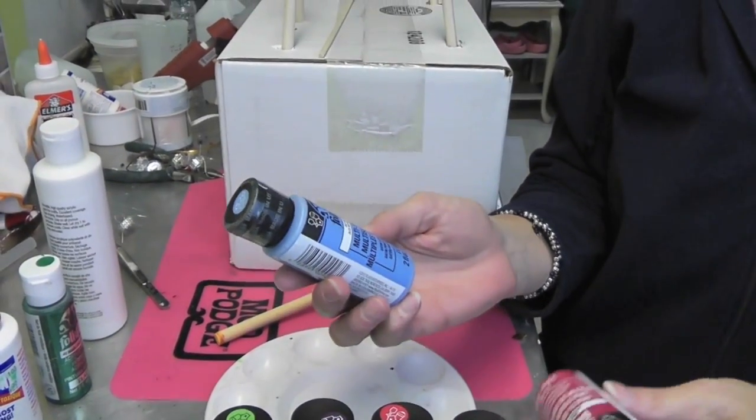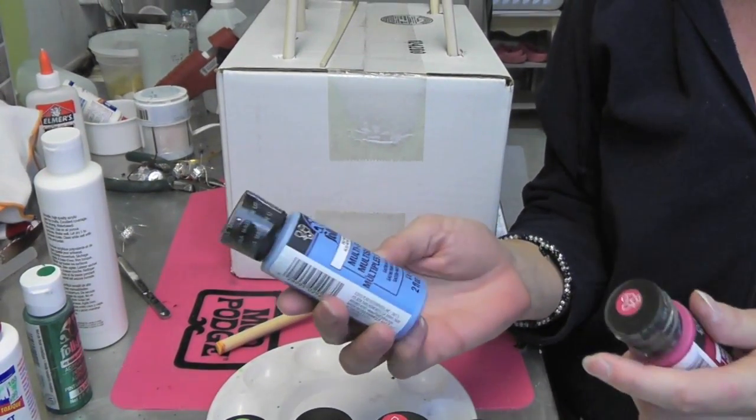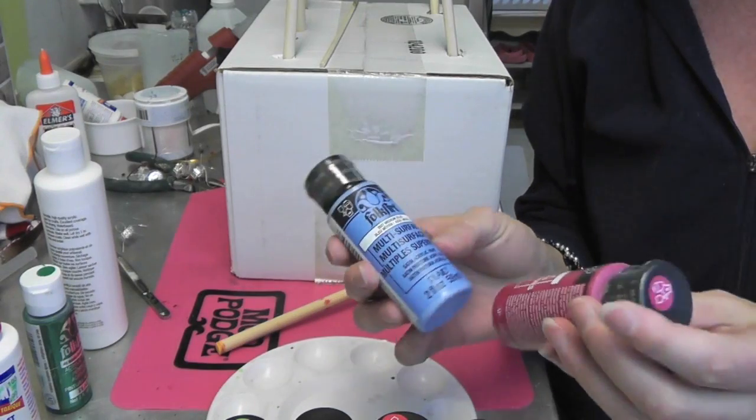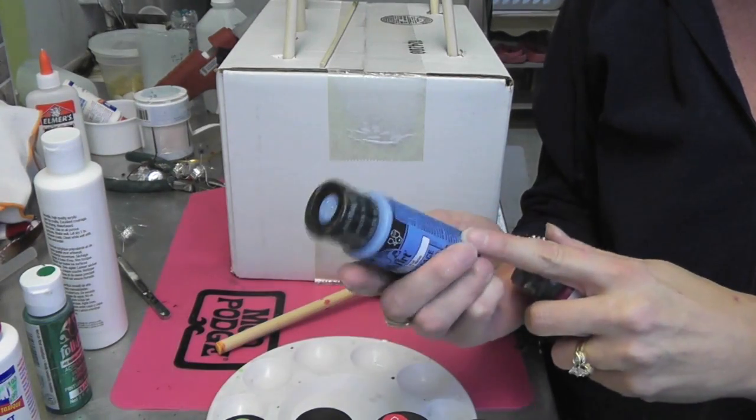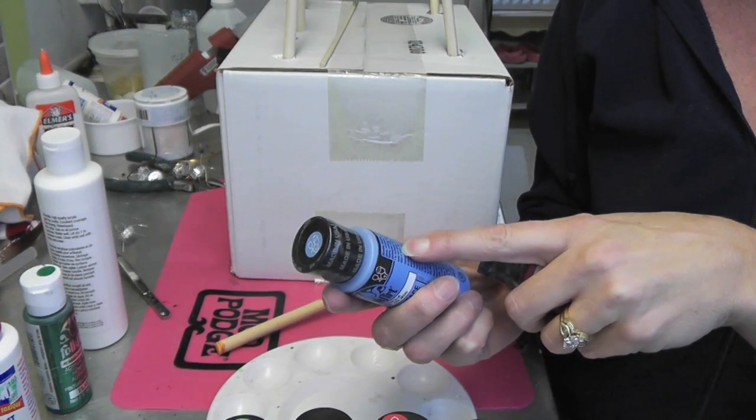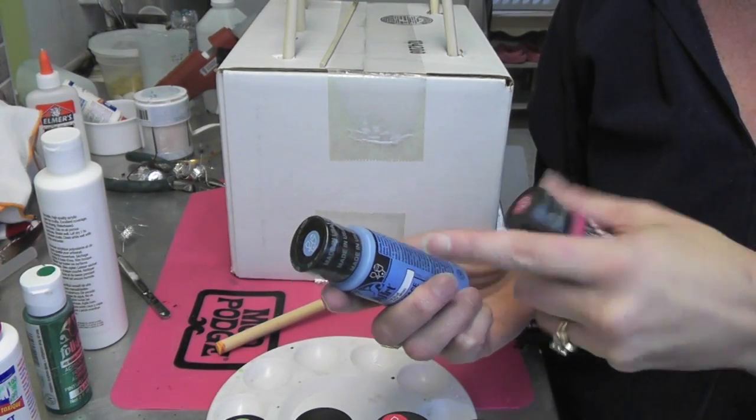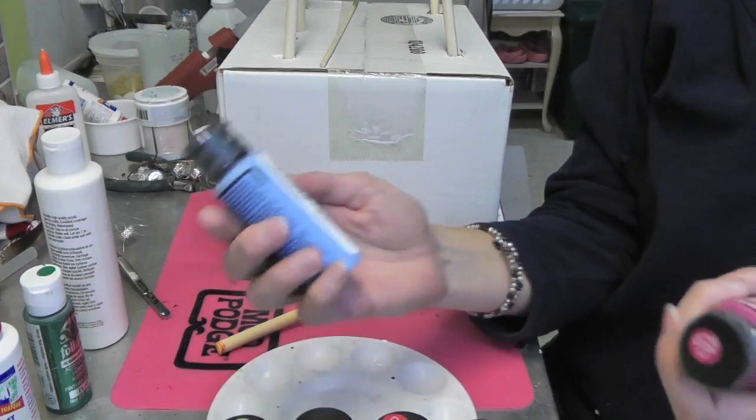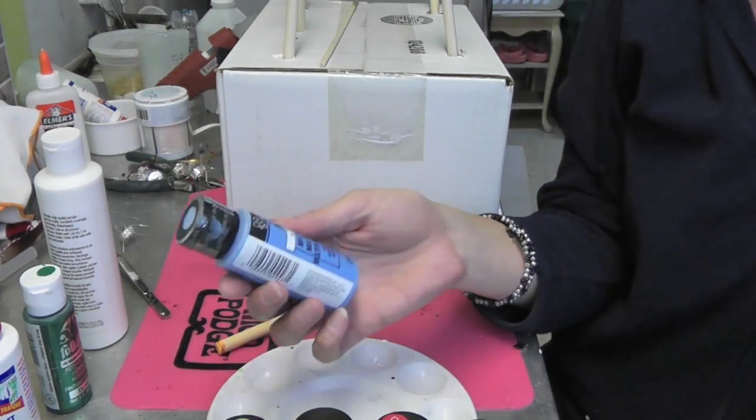Now the paint I'm using is this Plaid Folk Art multi-surface paint and you can put it on glass. If you let it air dry for 21 days it will cure onto the glass, otherwise you can bake it. And it says you've got to go to the website to find out how long to bake it.